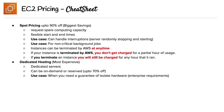Spot pricing offers up to 90% off, giving you the biggest savings. You're requesting spare computing capacity — like hotel rooms where they're just trying to fill vacant suites. If you're comfortable with flexible start and end times, spot pricing is a good fit. The use case is when you can handle interruption — servers randomly stopping and starting — making it great for non-critical background jobs. Instances can be terminated by AWS at any time. If AWS terminates your instance, you won't be charged for that partial hour of usage, but if you terminate it yourself, you will be charged for any hour it ran in.